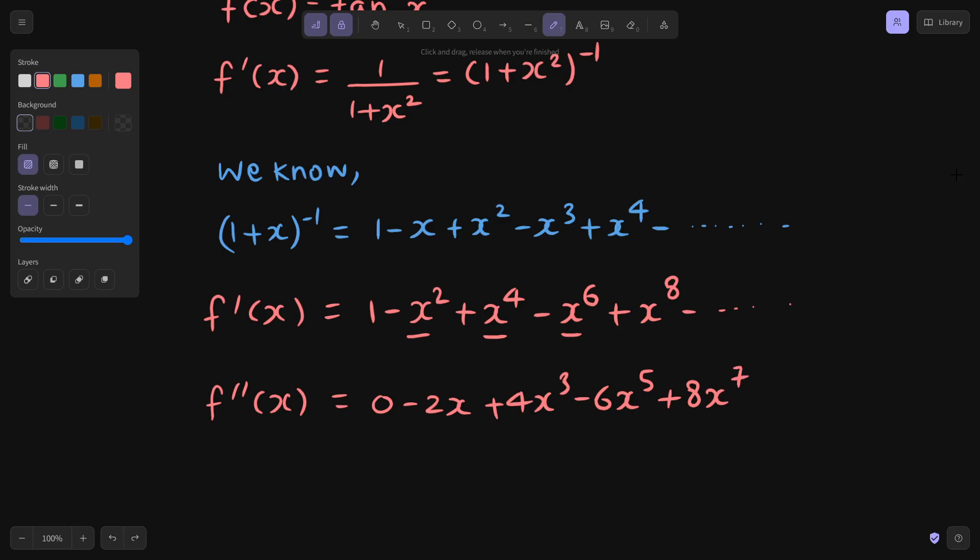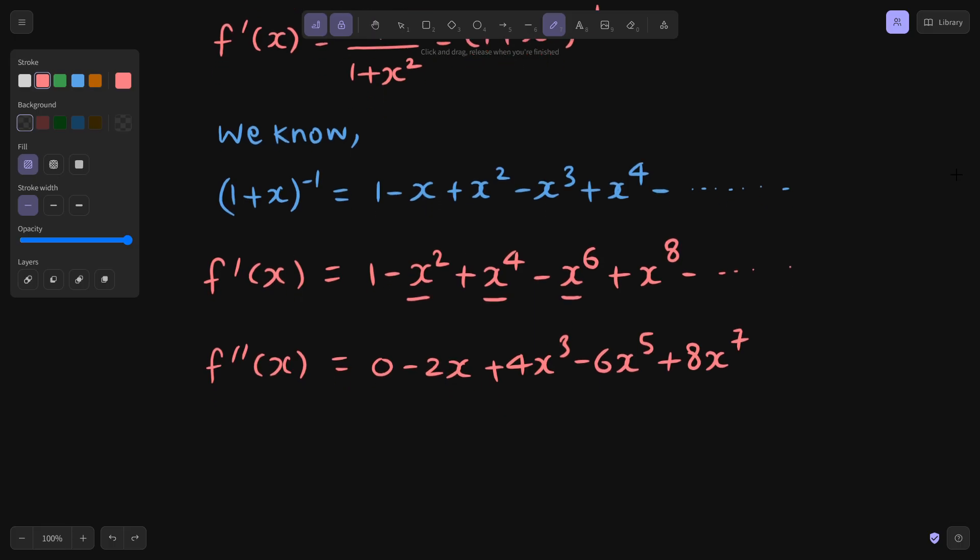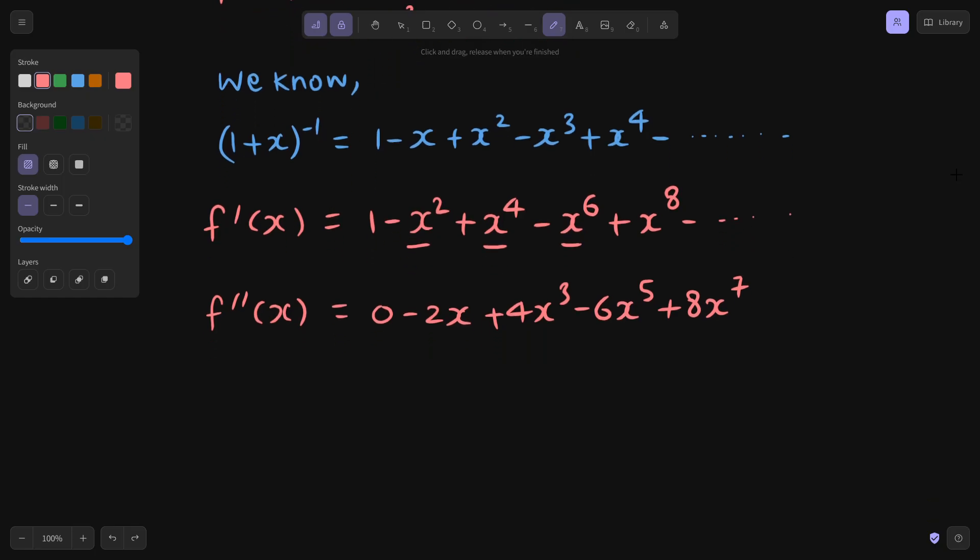Now one thing more you have to keep in mind that we are not concerned much about the derivative's actual value, but we are concerned more about the values of derivative at 0. So whenever x is there in any term, this is anyway going to give us 0 because you are further going to, in the next step we will put x as 0. So wherever you are seeing x is there, you can be sure that term is going to become 0. Only the constant terms are important for us. So in f dash x, we got only one constant term, in f double dash x, no constant term is there.